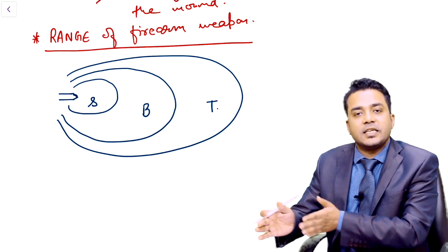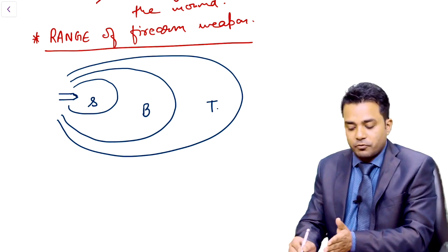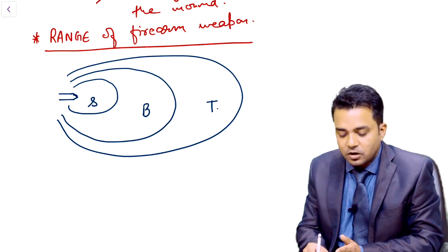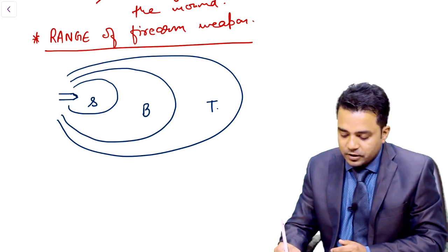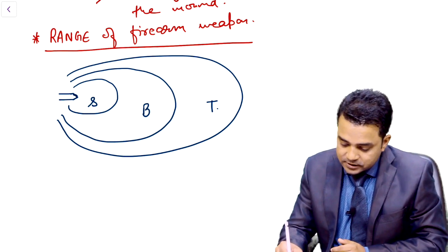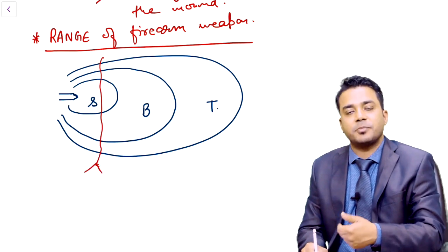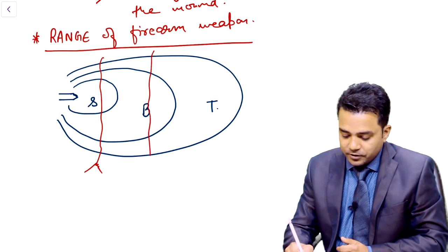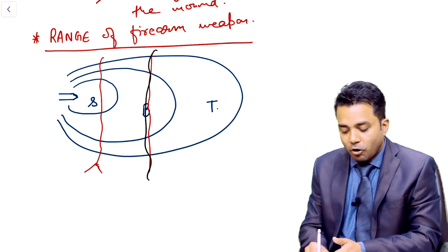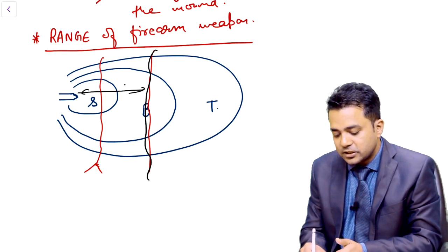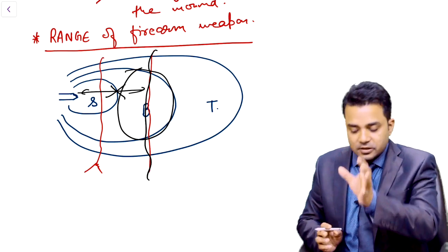On increasing the distance of the victim, what will go off? First of all, singeing effect will go off, then blackening will go off, then tattooing will go off. If your victim is standing close, he will have singeing, blackening, and tattooing effect. If the victim is further away, there will be no singeing effect — only blackening effect will be present.